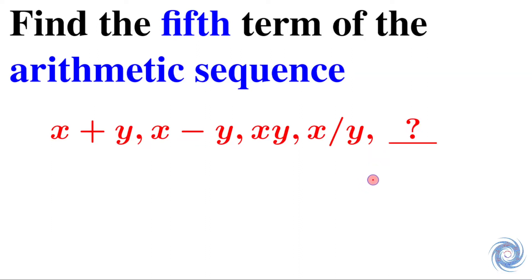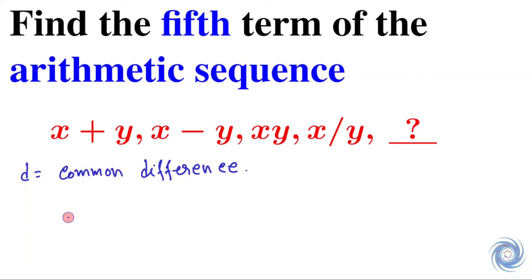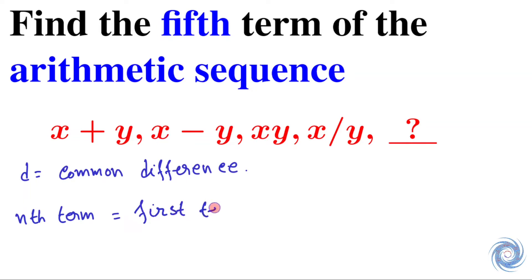Without loss of generality, let us assume that d be the common difference of this arithmetic sequence. Now let us use the general formula for arithmetic sequence: the nth term equals the first term plus n minus one times d.